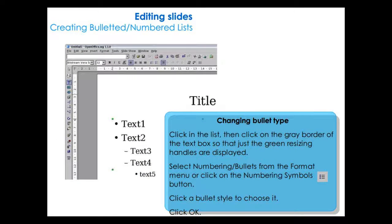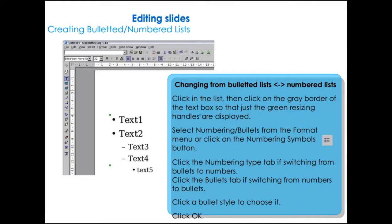To change the bullet type, click in the list, then click on the gray border of the text box so that just the green resizing handles are displayed. Select Numbering or Bullets from the Format menu or click the numbering symbols button. Click the Numbering Type tab if switching from bullets to numbers, or click the Bullets tab if switching from numbers to bullets. Click a bullet style to choose it, then click OK.